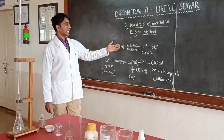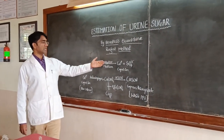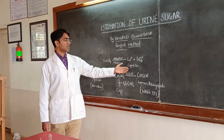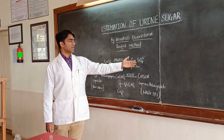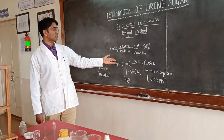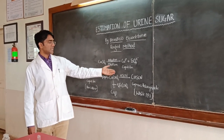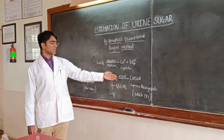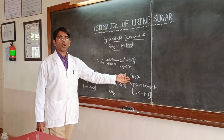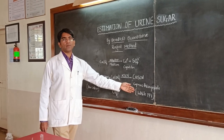Coming to the reaction: copper sulphate in alkaline medium gets converted to cuprous ion, cupric ion, and sulphate ion. Cupric ions in the presence of reducing sugar are further converted to cuprous hydroxide, then in the presence of potassium thiocyanide, converted to cuprous thiocyanide, which is the white precipitate generated.